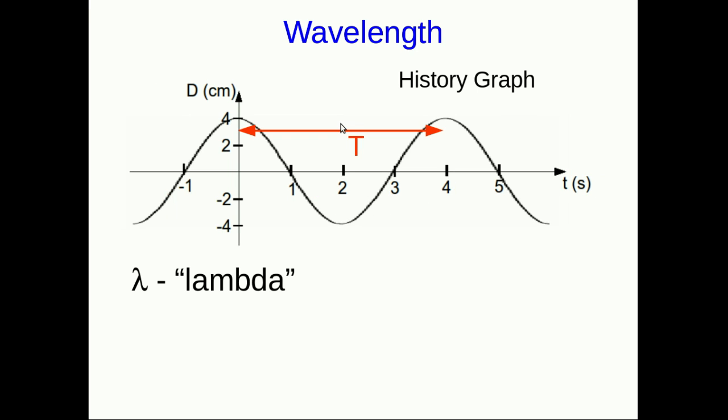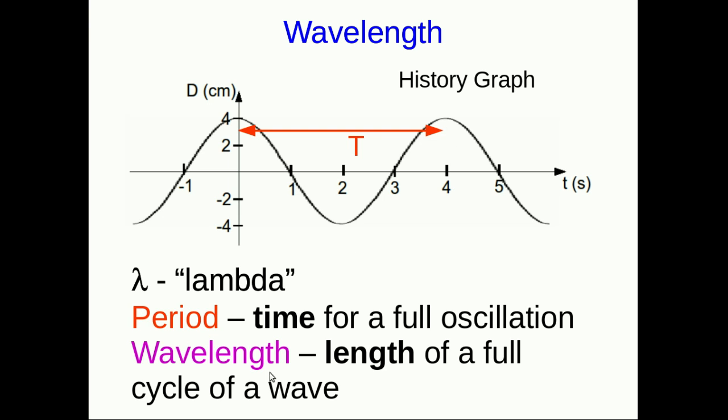Very similarly, on a history graph, those same, well, I'll say distances, but they're not distances, they're times, give you the period. So the period and the wavelength you can think of as sort of almost the same thing, but one you measure on a history graph and one you measure on a snapshot graph.